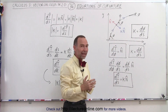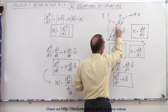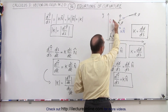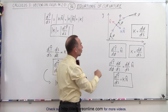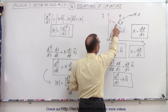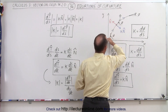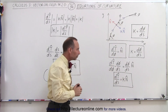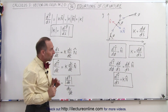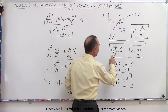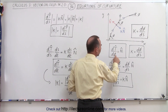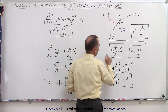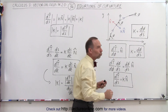We also know that we have a normal vector associated with any point on the curve. To find the direction of the normal vector, we simply take the unit tangent vector and rotate 90 degrees in a counterclockwise direction. The red vector here represents the unit normal vector at this location. We also remember that the derivative of the unit tangent vector with respect to the angle phi is equal to the unit normal vector.